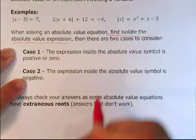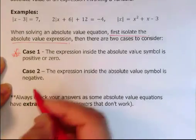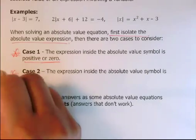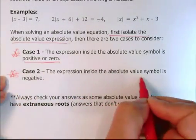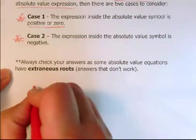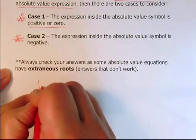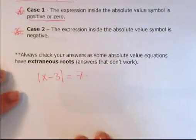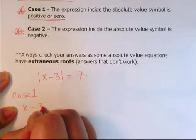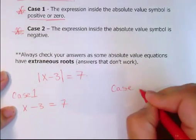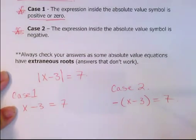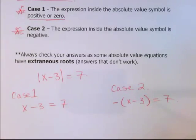And then after that, you have to remember that there is case 1, where it's the regular version of the function - the original where it's positive or zero. And then case 2 is the expression inside the absolute value symbol is negative. If we have something like the first example, we want case 1 to look like this: x minus 3 equals 7. And we want case 2 to be negative (x minus 3) equals 7.